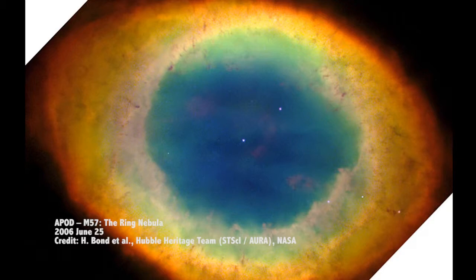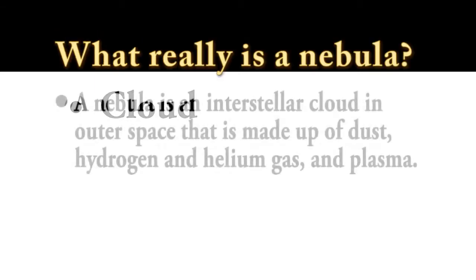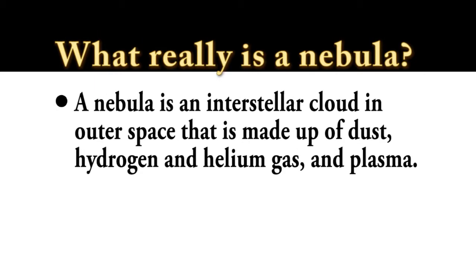It is named like that because it looks like a ring on the sky. If we translate the Latin word nebula, it would simply mean cloud. But a nebula is so much more than just a cloud. A nebula is an interstellar cloud in outer space that is made up of dust, hydrogen, helium gas and plasma.